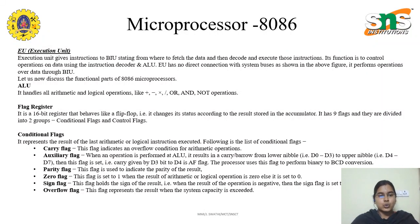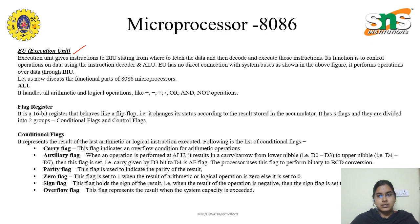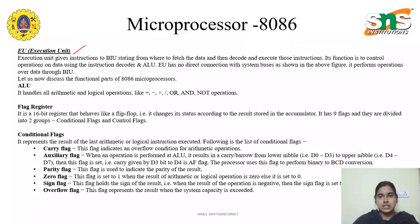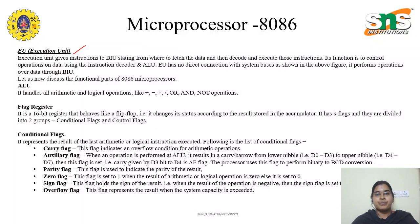The 8086 architecture is divided into two main units: the Execution Unit (EU) and the Bus Interface Unit (BIU). The execution unit gives instructions to the bus interface unit, stating from where to fetch the data, then decodes and executes those instructions. Its function is to control operations on data using the instruction decoder and ALU. The execution unit has no direct connection with the system buses and performs operations on data through the bus interface unit.